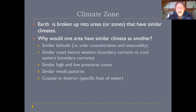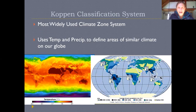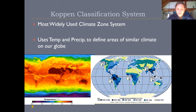Hopefully those are concepts you feel good about. Now we'll think about how these different things come together to make different parts of the world have different types of climates. There are different ways to classify the earth into zones, but the most standard widely-used system today is called the Köppen classification system. It's been around for about 100 years and uses two main climatic characteristics: temperature and precipitation.